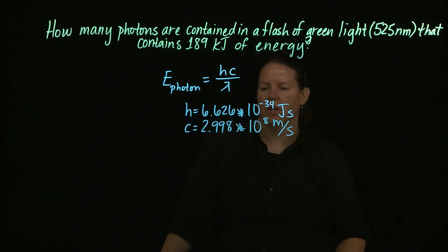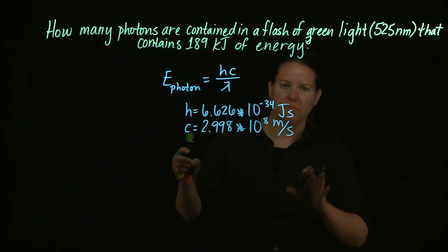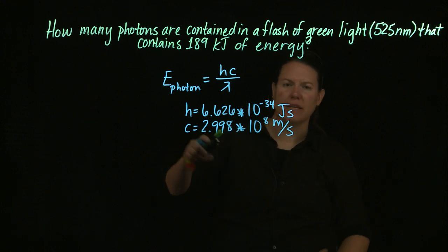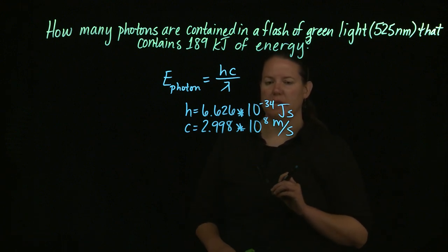Alright, so 2.998 times 10 to the eighth meters per second is the constant we'll be using. And remember that this particular exam is hard because c in chapter 7 means the speed of light, c in chapter 6 means specific heat capacity. It's a little confusing at times.